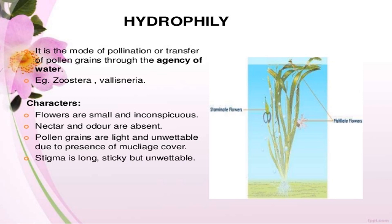Hydrophily is the name of the pollination in which pollination takes place with the help of water — that means water is the agent. 'Hydro' means water. It is a mode of pollination or transfer of pollen grains through the agency of water. A very good example is Vallisneria. Flowers are very small. The characteristic features of flowers showing hydrophily: flowers should be small and inconspicuous, nectar and odor are absent. Pollen grains are very light and unwettable due to the presence of a mucous covering. The stigma is long, sticky but unwettable.